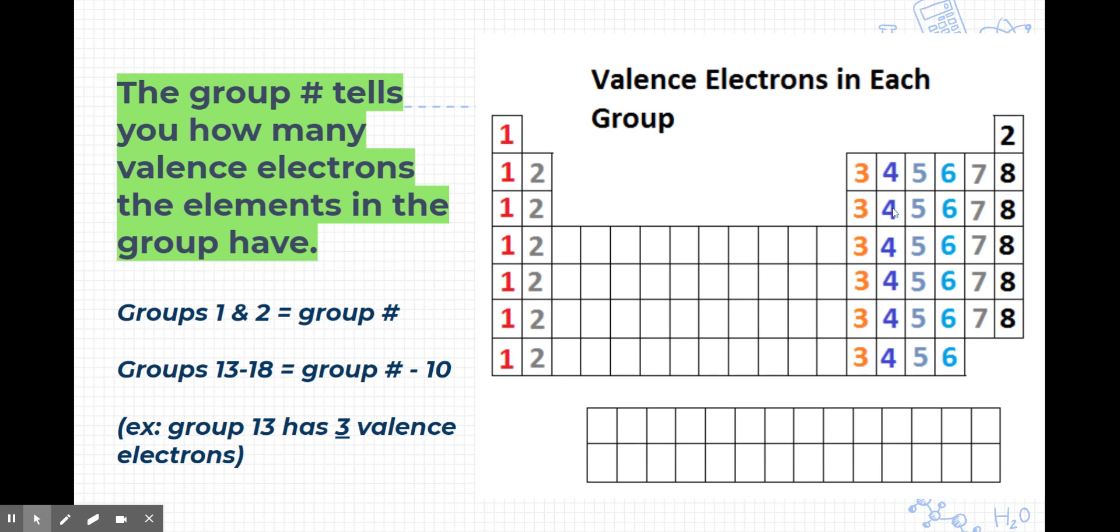Groups 13 through 18 are a little bit different. So group 13, we're skipping all the way over here. We are going to ignore these middle groups and the transition metals down here. Those have special rules that we're not going to cover in this video. So in group 13 through 18, it's a little special. These elements in these groups have their number of valence electrons as the group number minus 10. So group 13 has three valence electrons, 13 minus 10 is 3. Group 14, all of these elements have four valence electrons. Group 15 has five valence electrons. Group 16 has six, and so on.